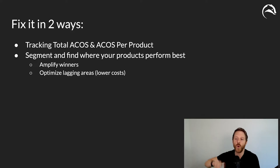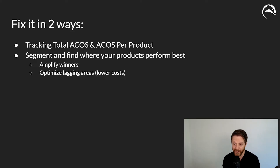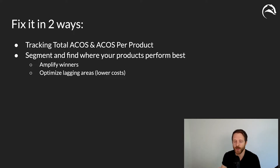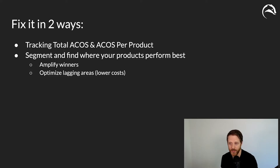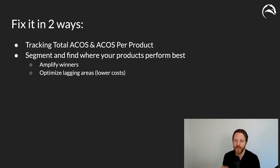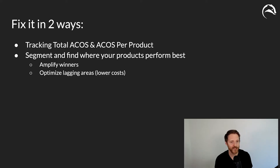Don't be fooled by the averages — if you're only tracking at an account level, you are missing more than half the information you need. When you track on a per-product level with your products sorted by ad spend, you can see exactly how much each one costs and what the total ACOS is per product.